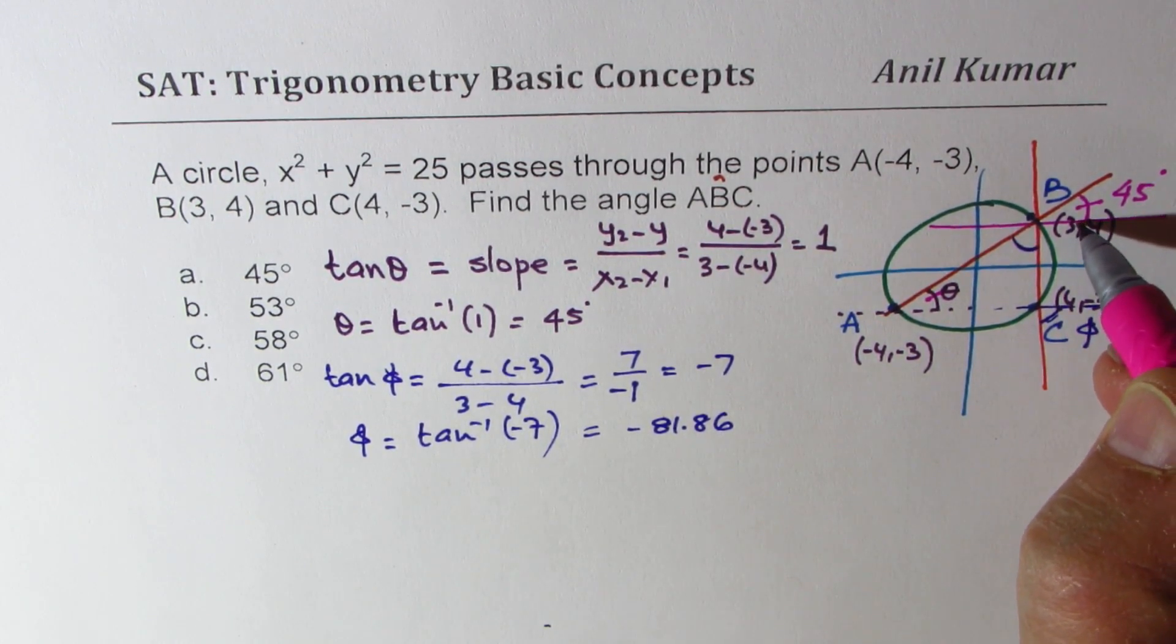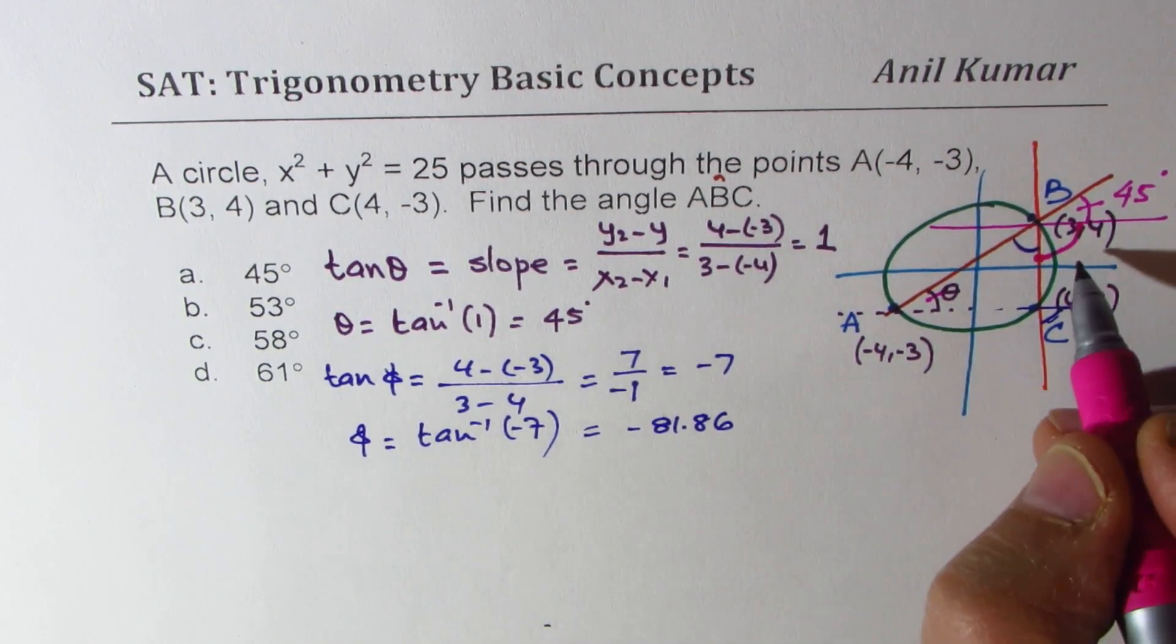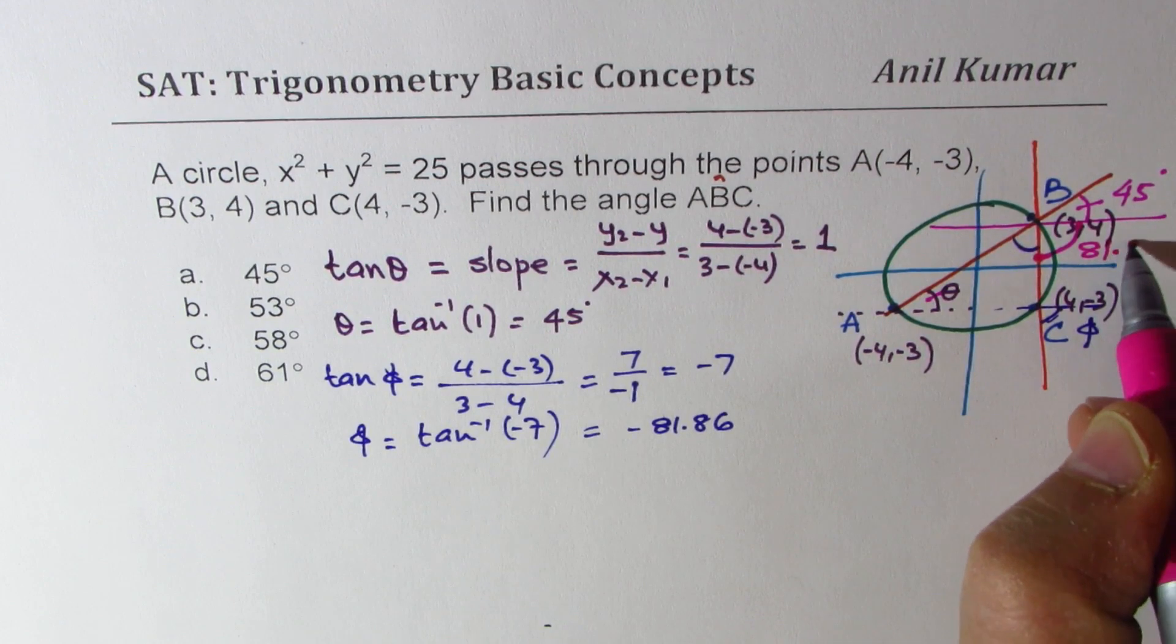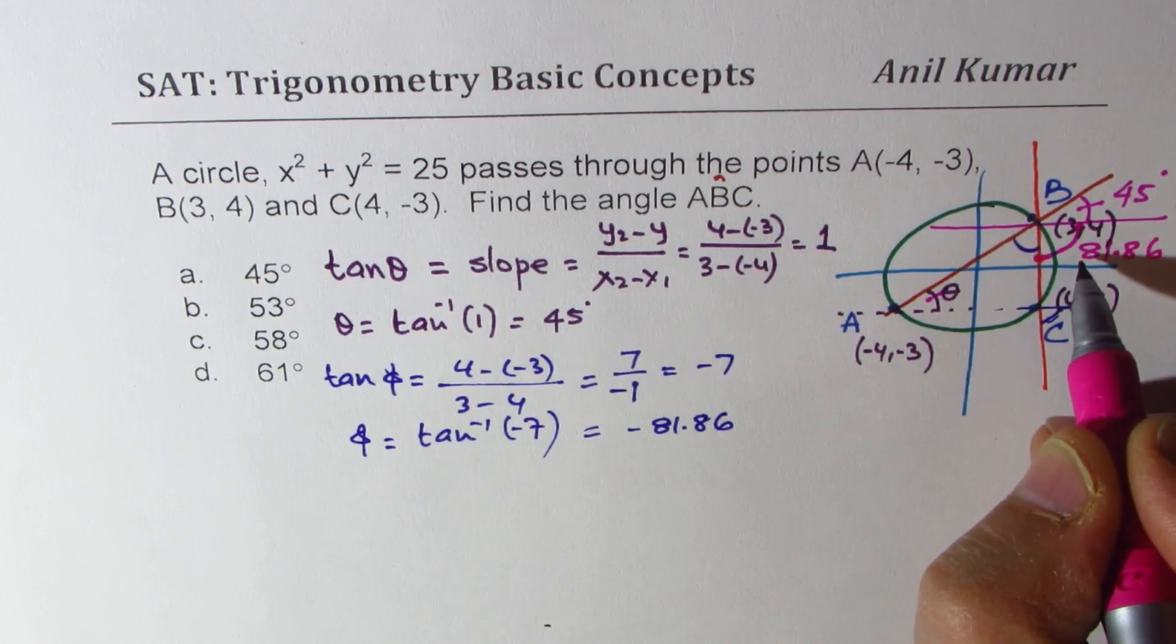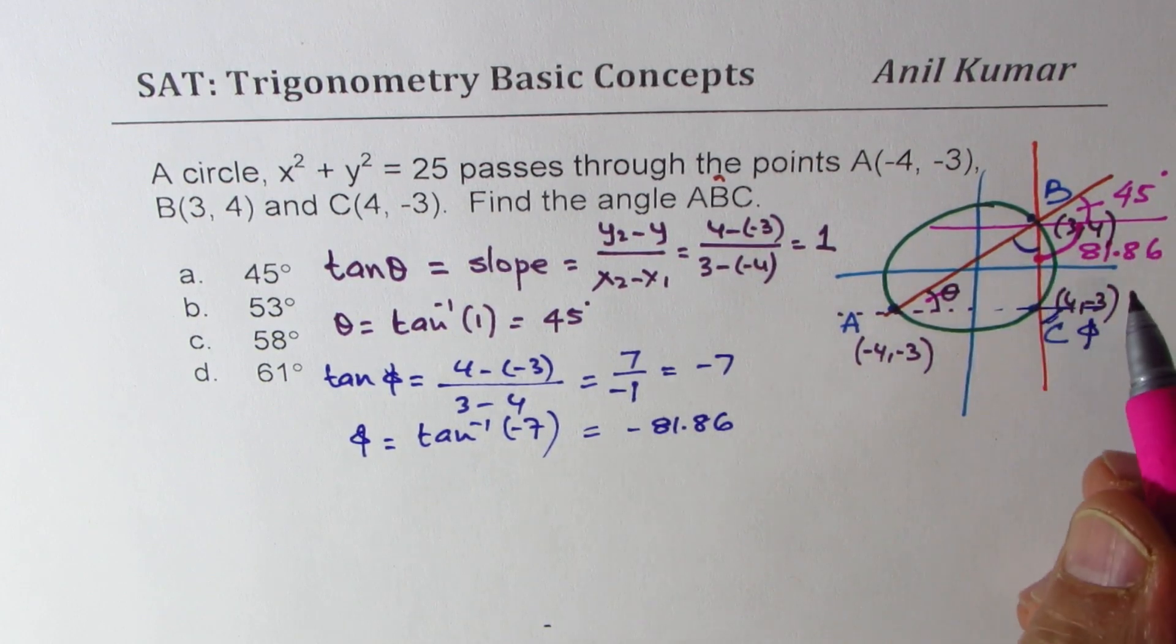Now if you compare with this line and the horizontal line, we got this angle here as how much? This angle is 81.86. No need to write minus since it is in quadrant 4 and going clockwise we write it minus, but it is 81.86, correct?